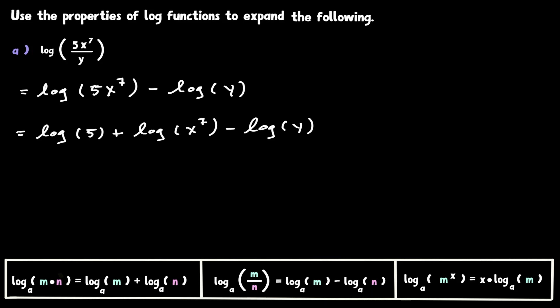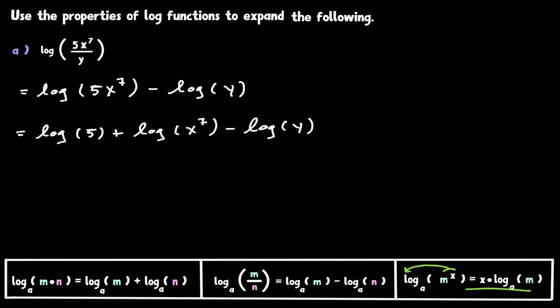We are almost done. The inside of our first log is already by itself, so there's nothing to be done there. The inside of our third log is the same case, but the inside of the second log still has an exponent. We have a rule for that — anytime we have an exponent inside the log, we can get this exponent and bring it to the front. So let's do that. Let's get this value of 7 and bring it in front of the log.